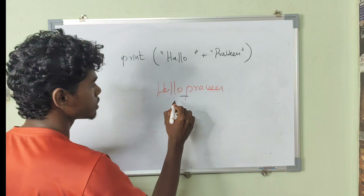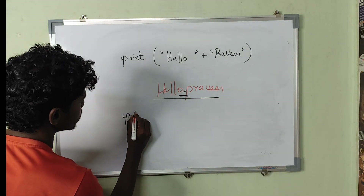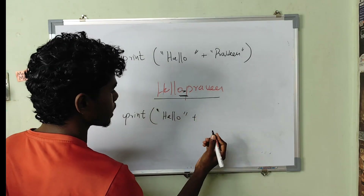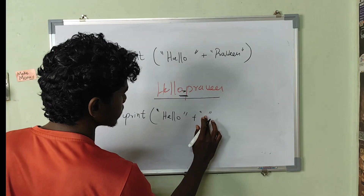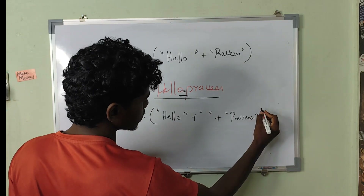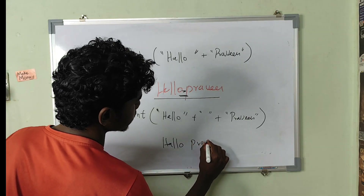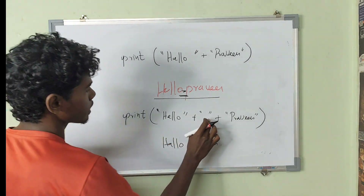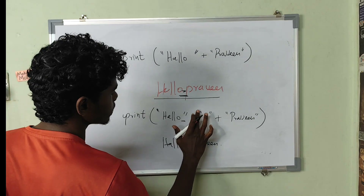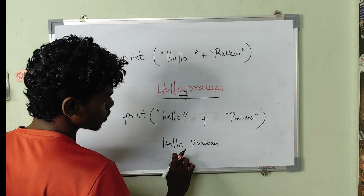There is a gap. That's why we do this. For example, we type hello, then we close the string and add a plus. For this space, we add a plus symbol, then we add another plus symbol. We close the parenthesis. Now we show the output — Hello space and Praveen. You can see a space where we add a little space.